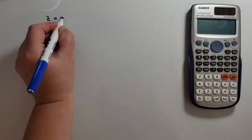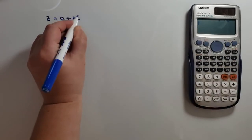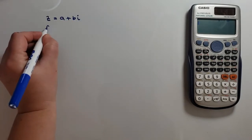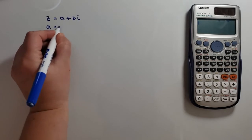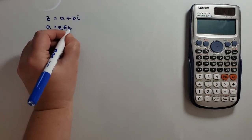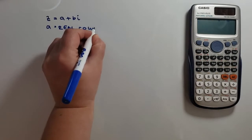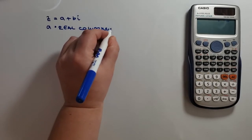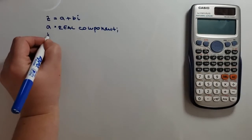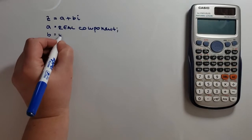Complex numbers in rectangular form are written in terms of its real and imaginary components. So z is equal to a plus bi, where a is the real component, b is the imaginary component.